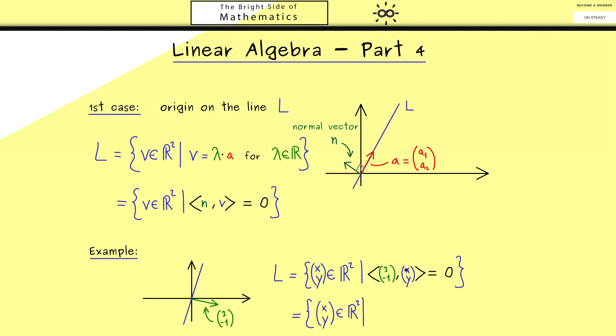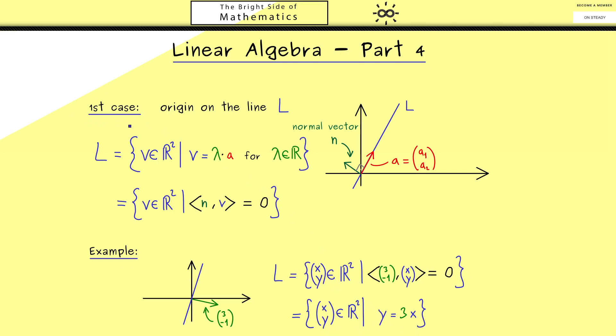So we multiply 3 with x and minus 1 with y and then add them. Hence we can write the equation as y is equal to 3x. And there you see this is how you would describe this line as the graph of a function. So I would say everything fits nicely and therefore we are ready for the second case.